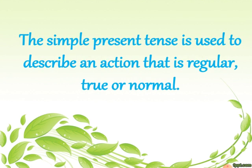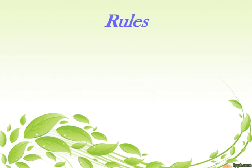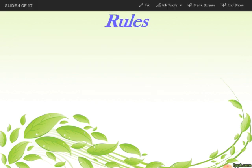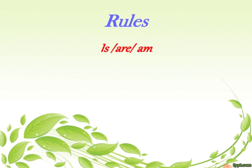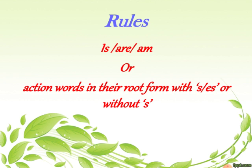Simple present tense is used to describe an action that is regular, true, or normal. Generally, simple present tense is used to show repeated action. The rules of simple present tense: is, are, am, or only action word in their root form with s or es or without s.